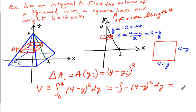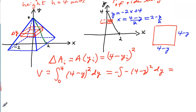And then using this approach, you can certainly do it the other way here. But using this approach, we end up with a negative value of, let's see, 4 minus y to the third over 3, evaluated from 0 to 4.